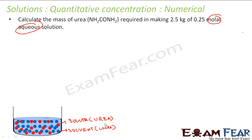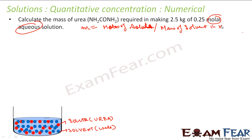We have to find the mass of urea required to make 2.5 kg of 0.25 molal aqueous solution. From the formula we know that molality (small m) is nothing but moles of solute divided by mass of solvent in kg. Moles of solute is mass of solute divided by molar mass of solute.